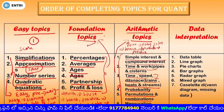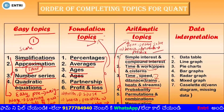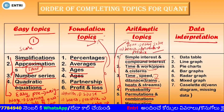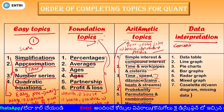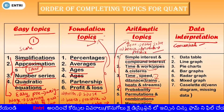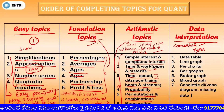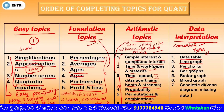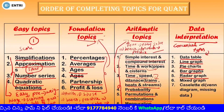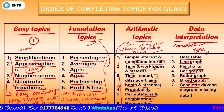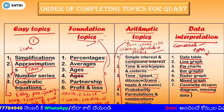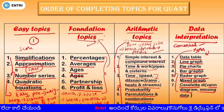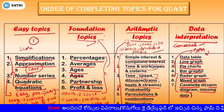Once you complete arithmetic topics, concentrate on data interpretation questions. We have different types: like data table, line graph, pie charts, bar graphs, radar graphs, and mixed graphs. And then we have Venn diagrams and missing data questions. So we have different types of questions. This is all about the order of completing topics for the Quant section.